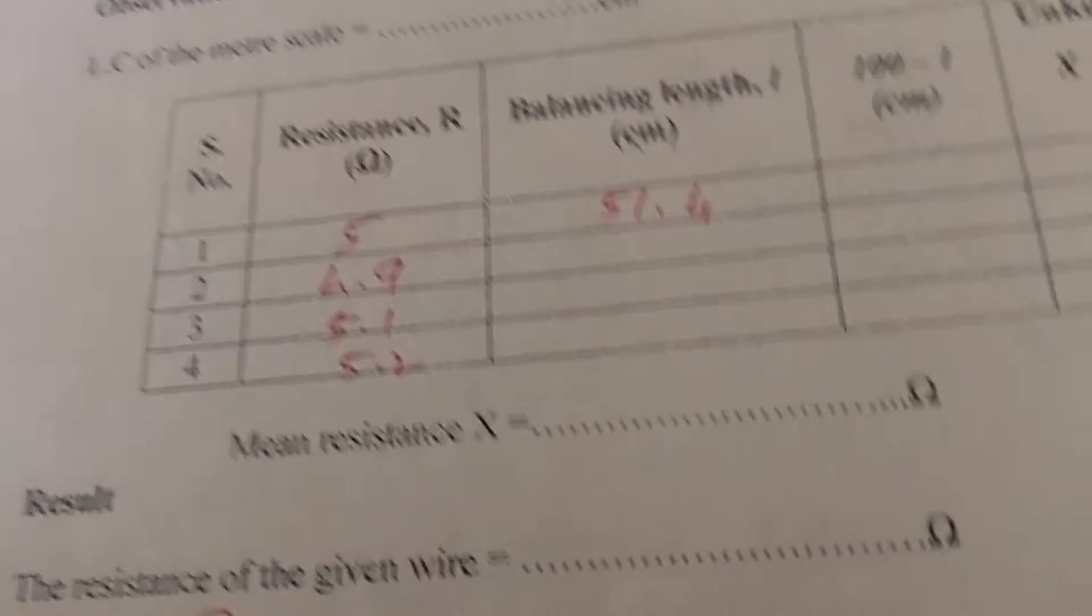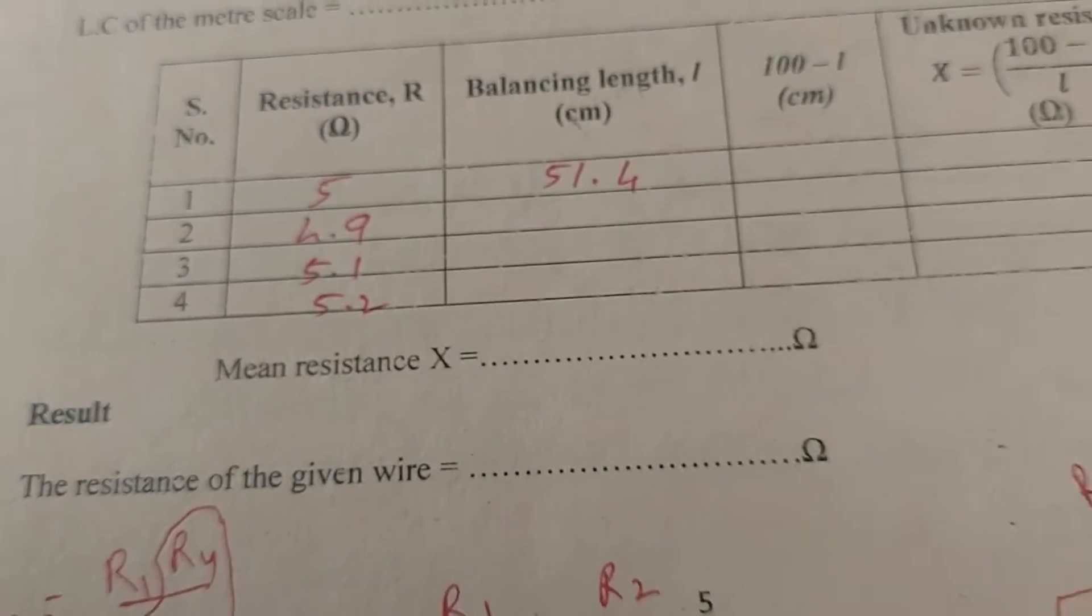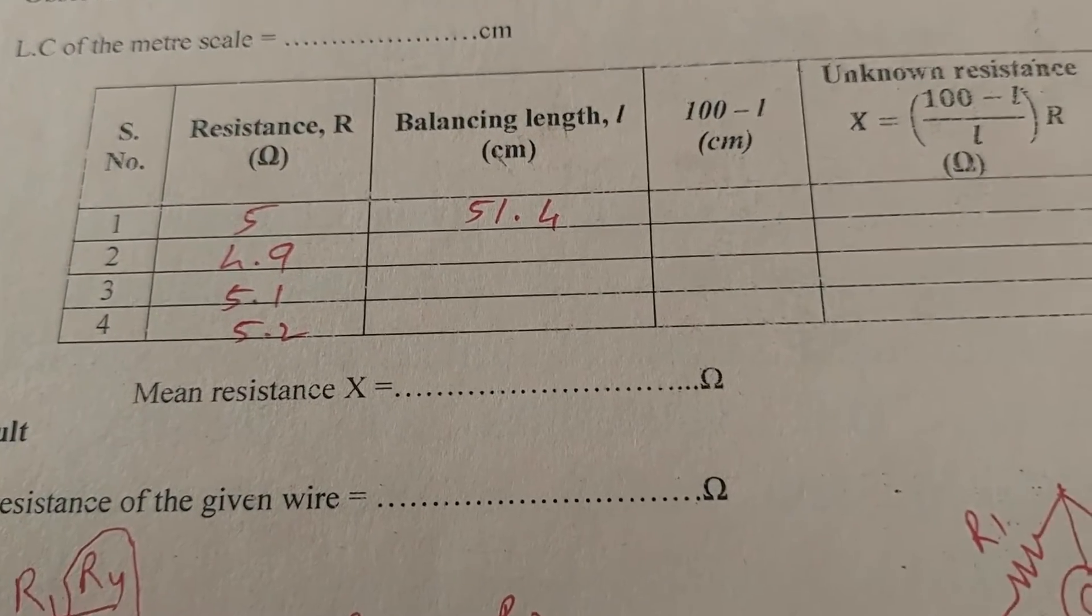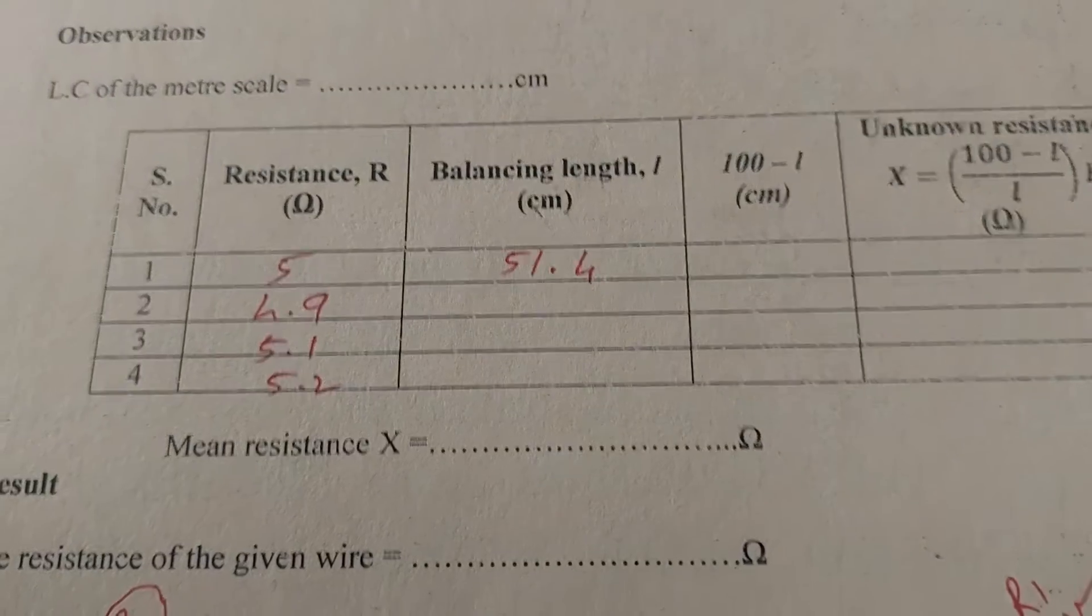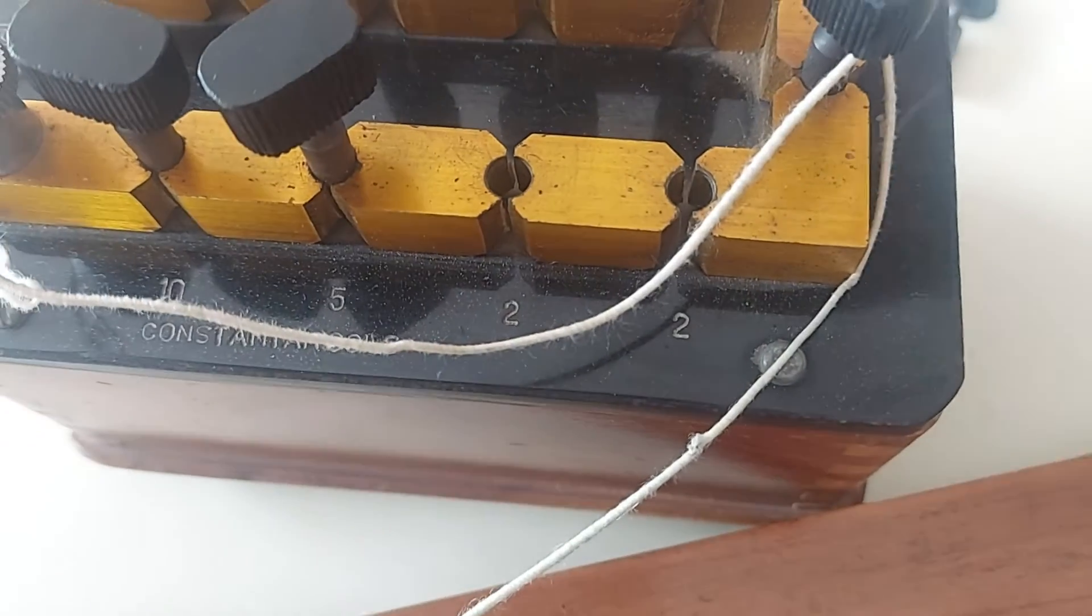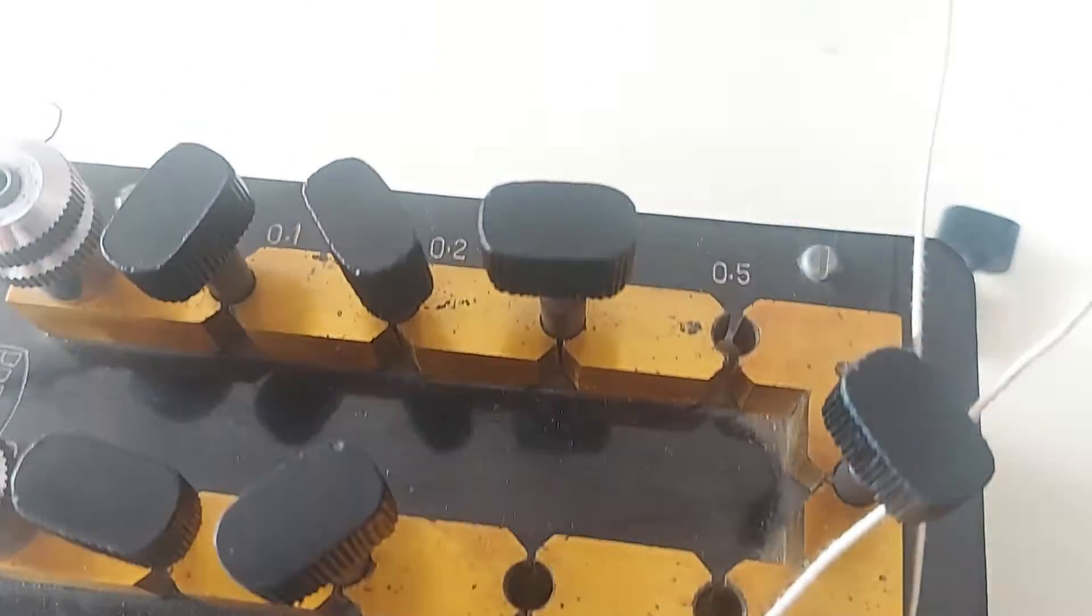Now what you do is increase the resistance by 0.1 for the third and fourth value. And for the second one, we have reduced it by 0.1. So see this, 4 and 0.9. We have introduced the 4.9 resistance through the resistance box.